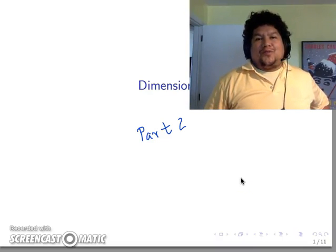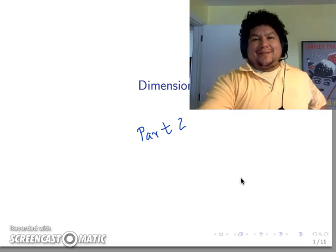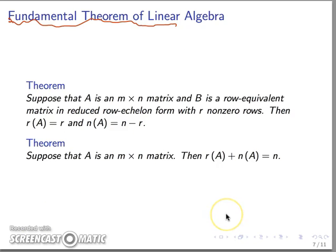Welcome to part two of dimension of vector spaces. Let's remember that the definition of rank is something that's based on the row reduction of the matrix.